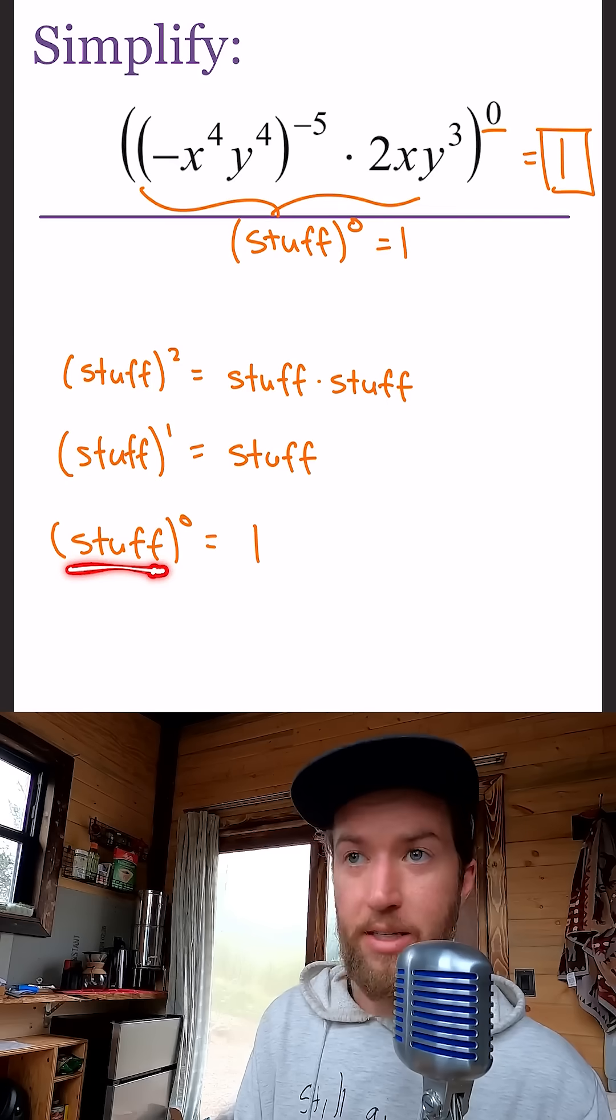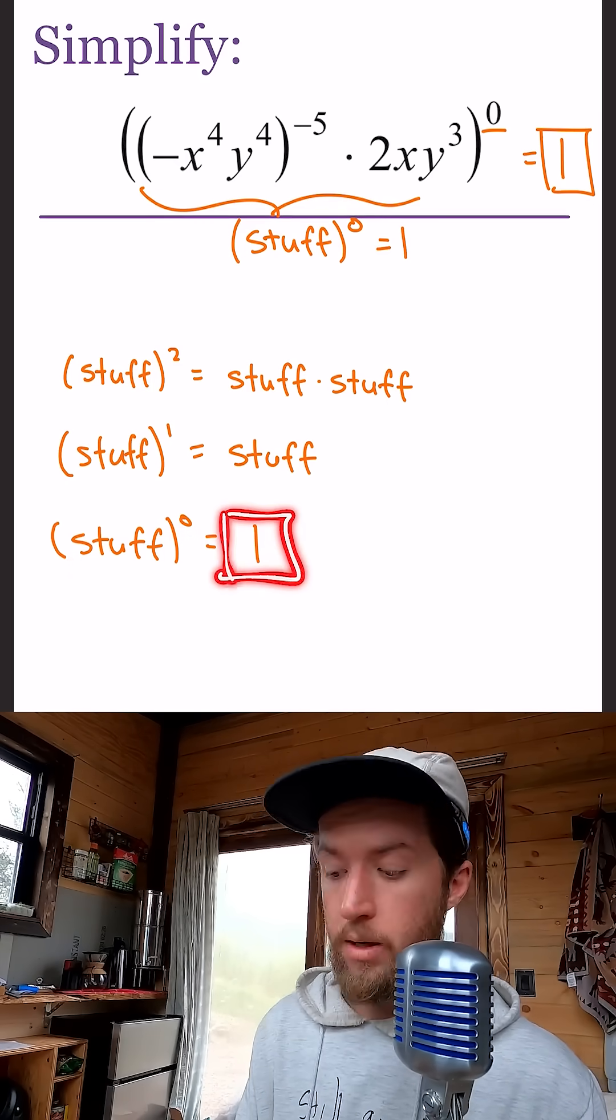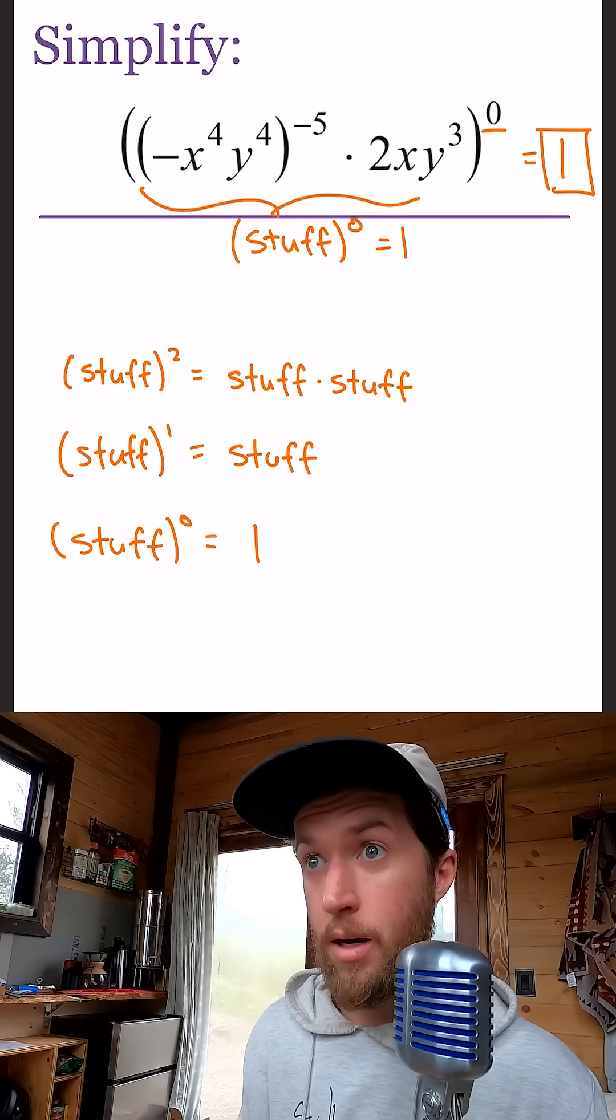Inside the parentheses, if it's raised to the zero power, that stuff raised to the zero is equal to one. Make it as complex as you want - that is kind of the key to simplicity here.